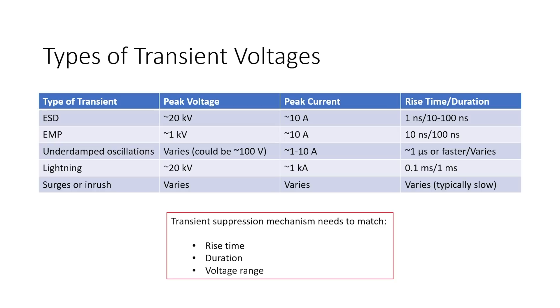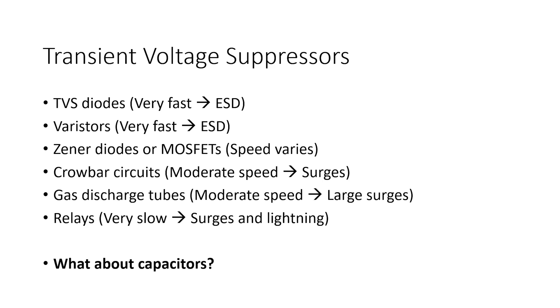So whatever mechanism that you use to suppress transient voltages, it needs to match or be able to respond to the rise time. That's the first criteria that we use to determine whether or not a particular component is going to be suitable for transient voltage suppression. The other is the duration, so how long can it withstand that transient voltage, and then what range of voltages can it withstand.